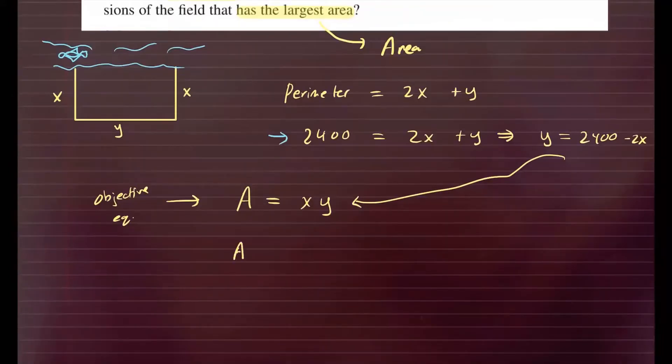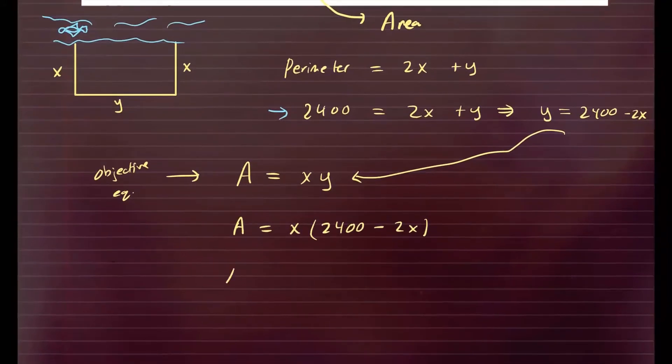So if we do that, we have the area is equal to x times y. y is replaced with 2400 minus 2x. Go ahead and distribute the x, simplified before taking the derivative. This would give you 2400x minus 2x squared. Now I'm going to go ahead and take a derivative.